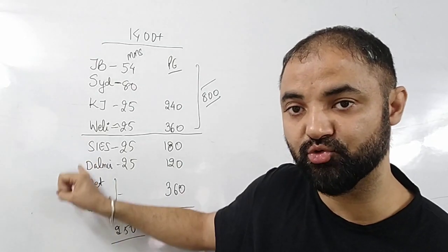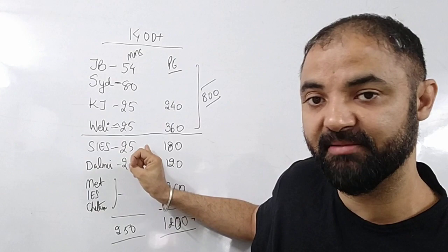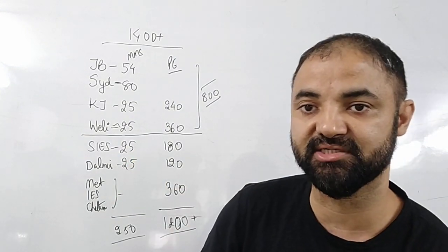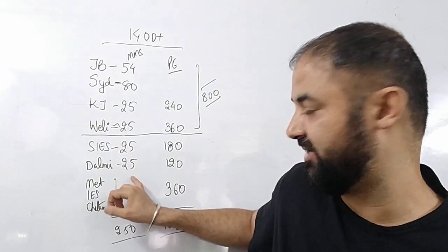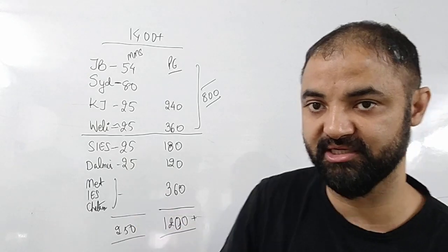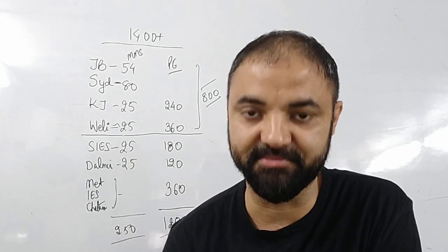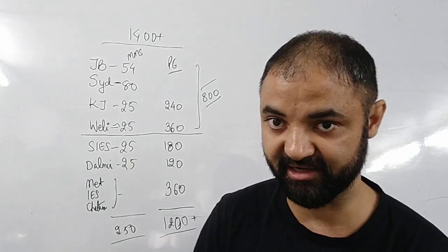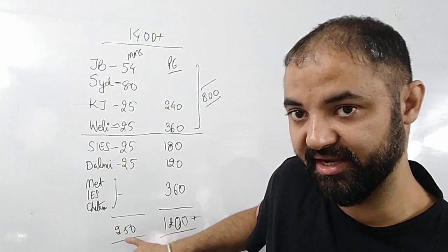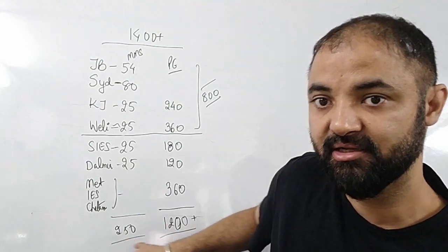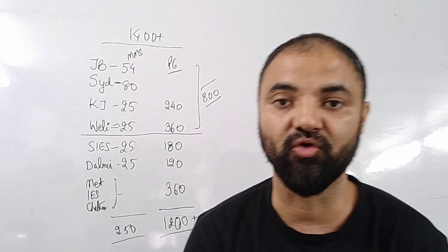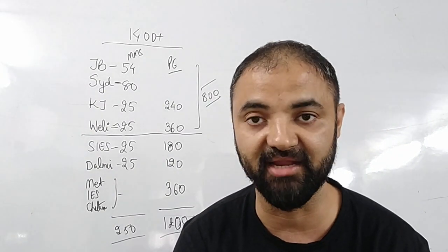Then SIS, Darmia - again 25 seats in MS, but PGDM is 180 seats and 200 seats. Amit, AIS, Chetna - same way, 120 seats per college are up for grabs. So if I add them up, 1200 seats in PGDM and 250 open seats here. So total comes out to be 1400 plus open seats which are available for anybody to grab.